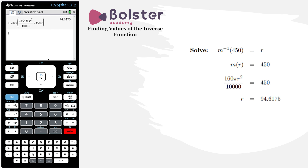This answer agrees with what we're expecting from the question — r needs to be greater than 50, and we get an answer of 94.6175. The only other thing we're asked to do is round to the nearest centimeter, so the final answer is 95 centimeters.